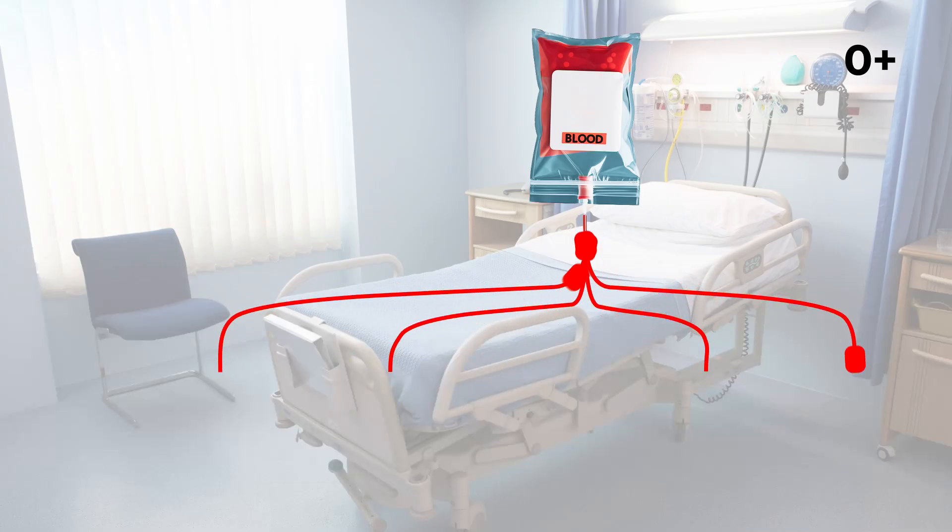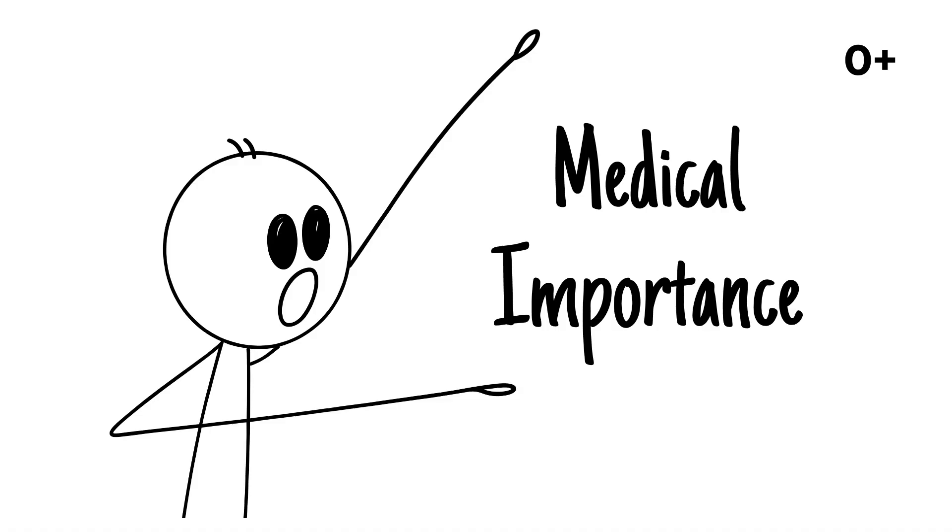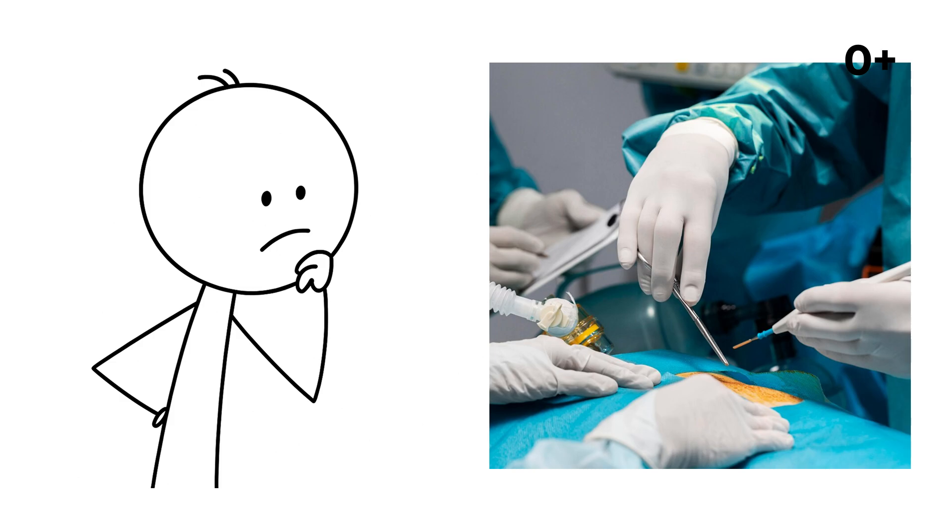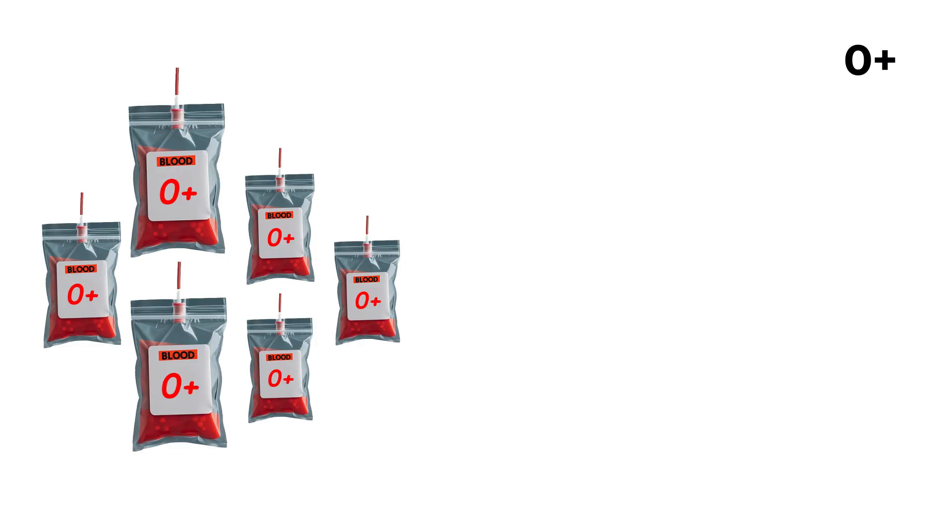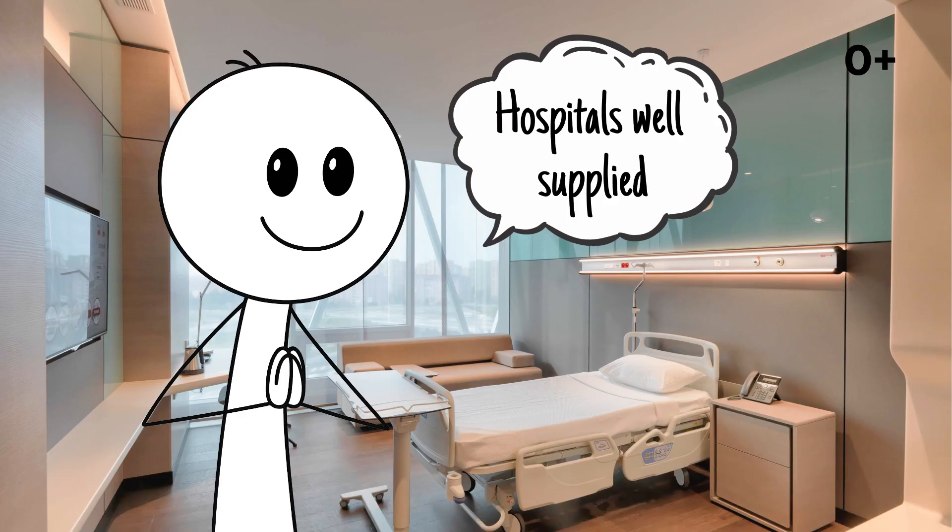One unit of O-positive blood can be given to any patient who is Rh-positive, whether their type is A, B, AB or O. This makes O-positive extremely important in medicine. In emergencies, doctors can use it to stabilize the majority of patients. Its widespread availability also means that blood banks rely heavily on donations from O-positive individuals to keep hospitals well supplied.